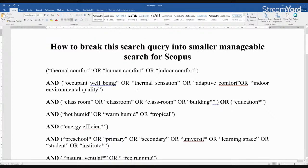So we are talking about human comfort, thermal comfort. That is one theme or concept that we want to search papers for. There are other terms as well. Occupant well-being, thermal sensation, adaptive comfort, indoor environmental quality. I guess these are, I will not say synonyms but these two concepts kind of relate with each other. It is about heat, about comfort and so on.